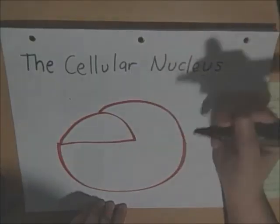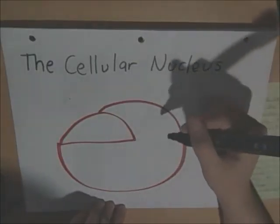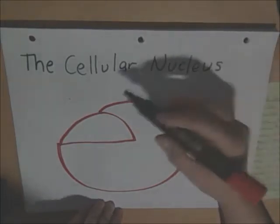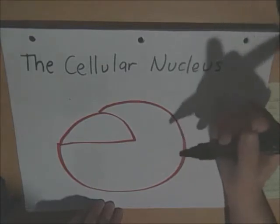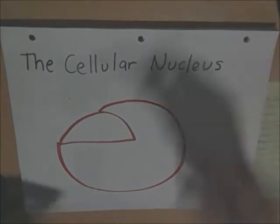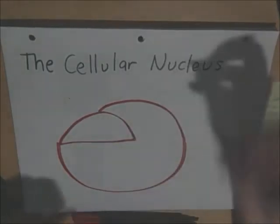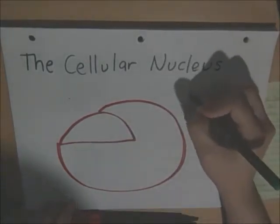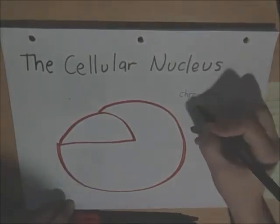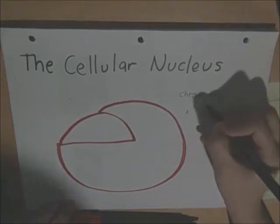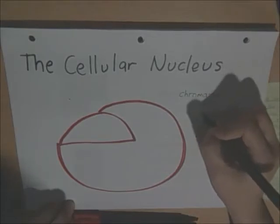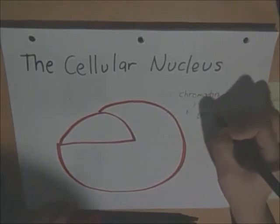If you think about the nucleus as a closed body, which it is, it encloses the chromatin. The cellular nucleus encloses the chromatin. We're going to differentiate and make sure that you guys know the difference between chromatin and chromatid because that's really important.